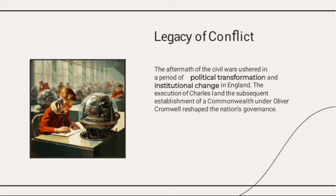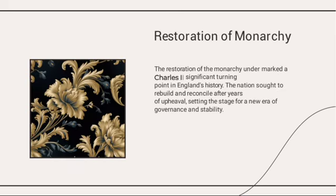The execution of Charles I and the subsequent establishment of the Commonwealth under Oliver Cromwell reshaped the nation's governance. For the first time, England was ruled not by a king but by a leader.